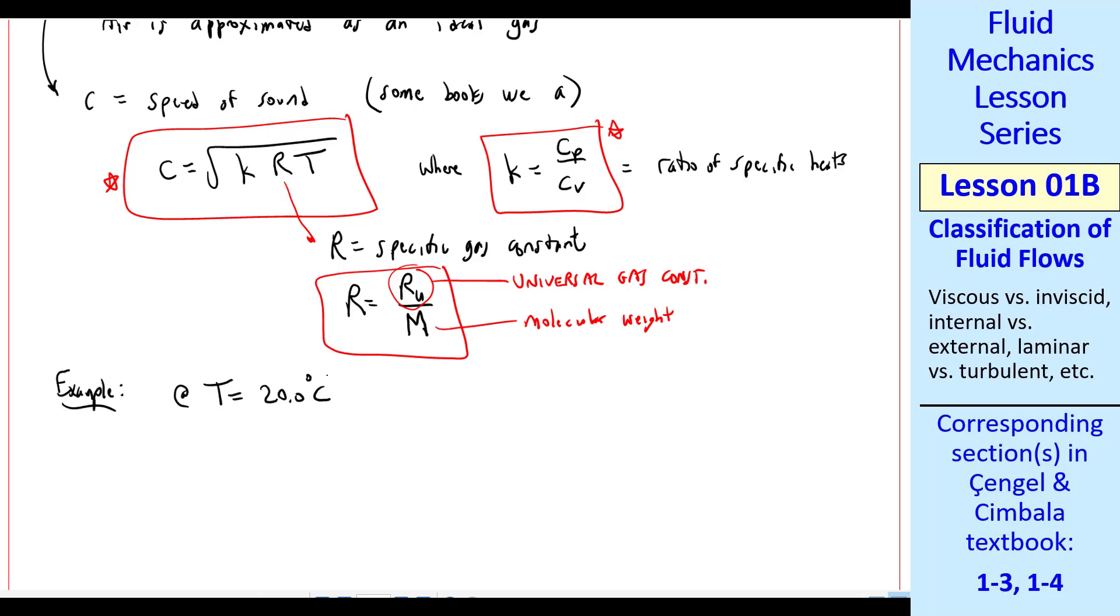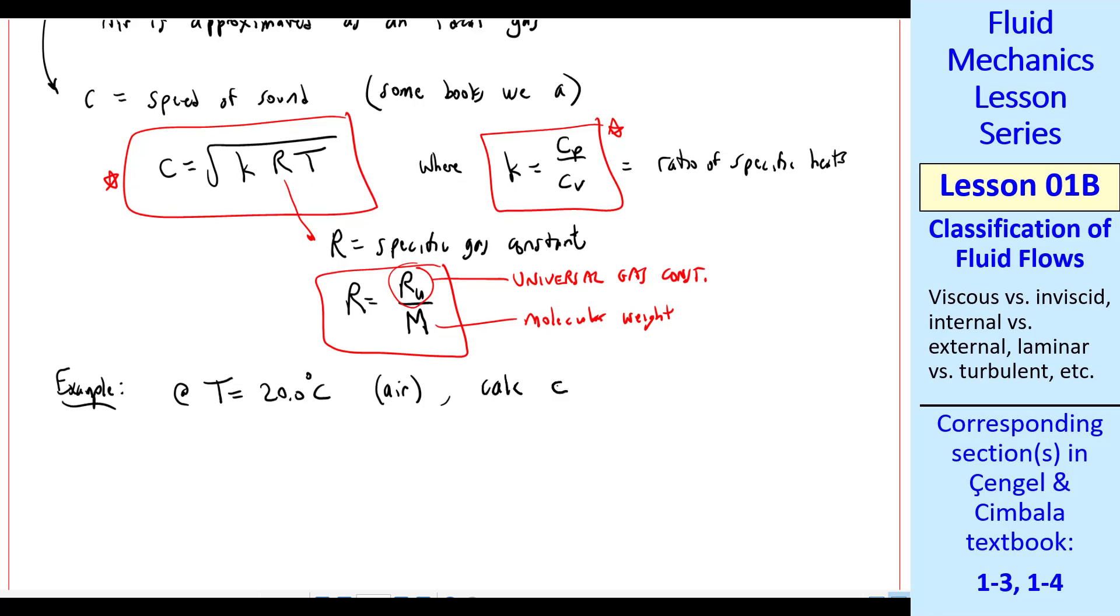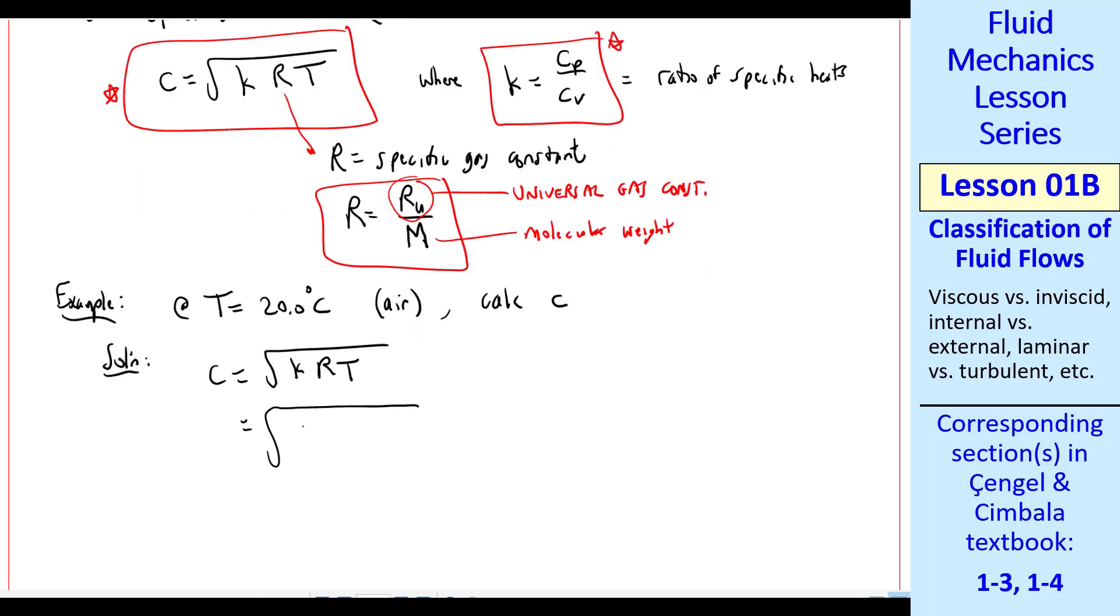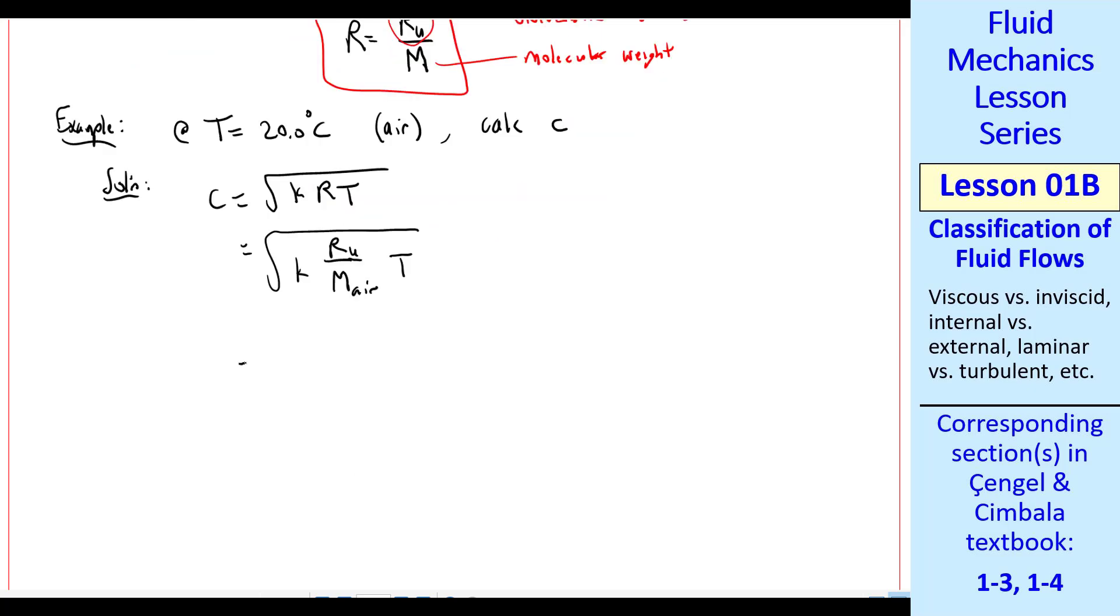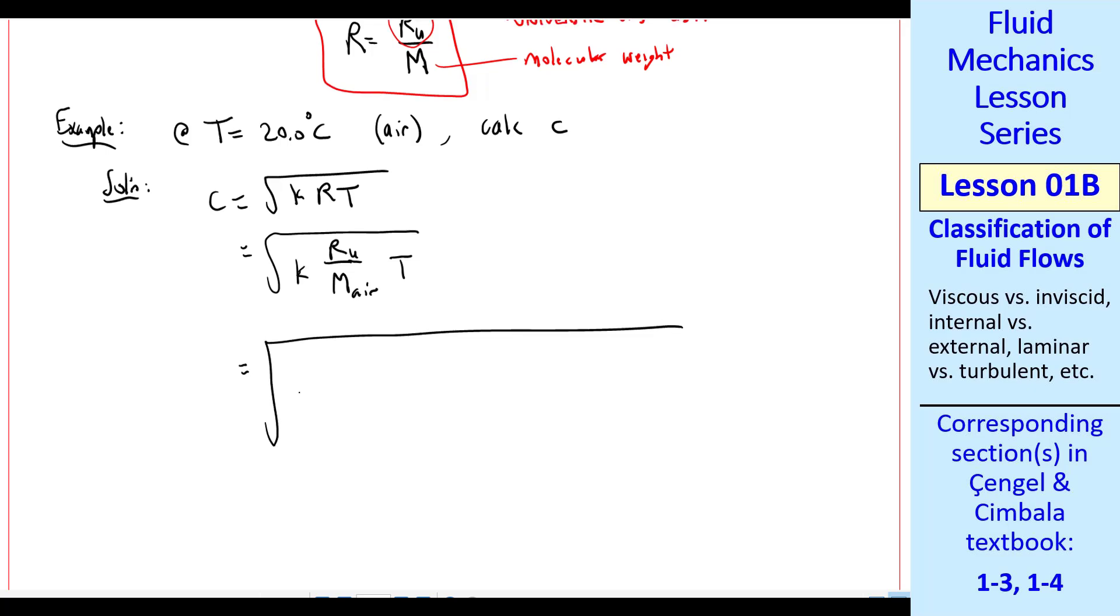Let's do a quick example. Let's take air at 20 degrees C. We'll typically be talking about air. Let's calculate the speed of sound. So I would use my equation from above, C equals square root of kRT. Using my definition of R, this is kRu over M, molecular weight of the air, times T. And now let's plug in our numbers. We have square root, k for air is 1.40. This is on your equation sheet, by the way. Also on the equation sheet is universal gas constant, 8.314 kilojoule per kilomole Kelvin. Molecular weight of air from the equation sheet is 28.97 kilogram per kilomole. Now be careful, this T must be in absolute temperature, not Celsius. It has to be in Kelvin, in this case, in the metric system. So we have to convert 20.0 plus 273.15. That gives us Kelvin.